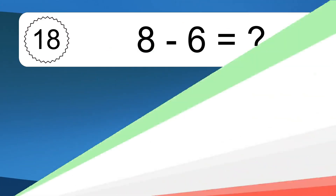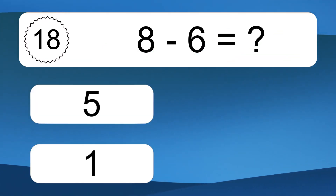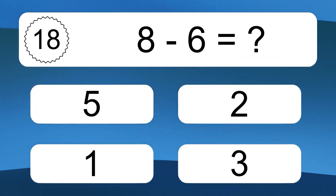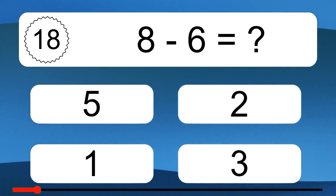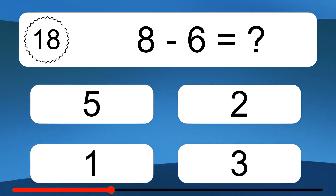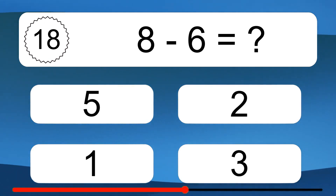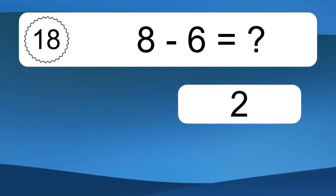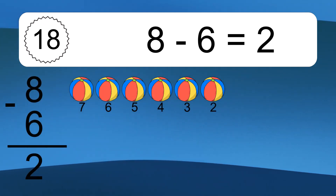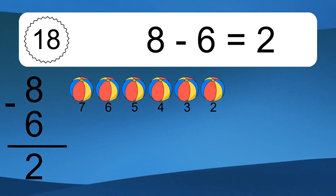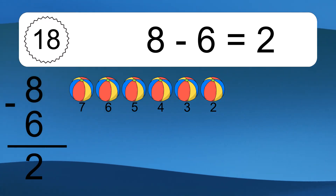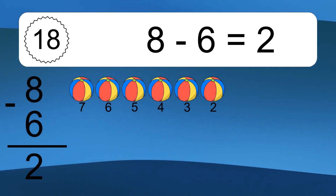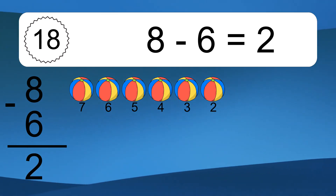8 minus 6 equals what? 8 minus 6 equals 2. Let's count it: 7, 6, 5, 4, 3, 2.